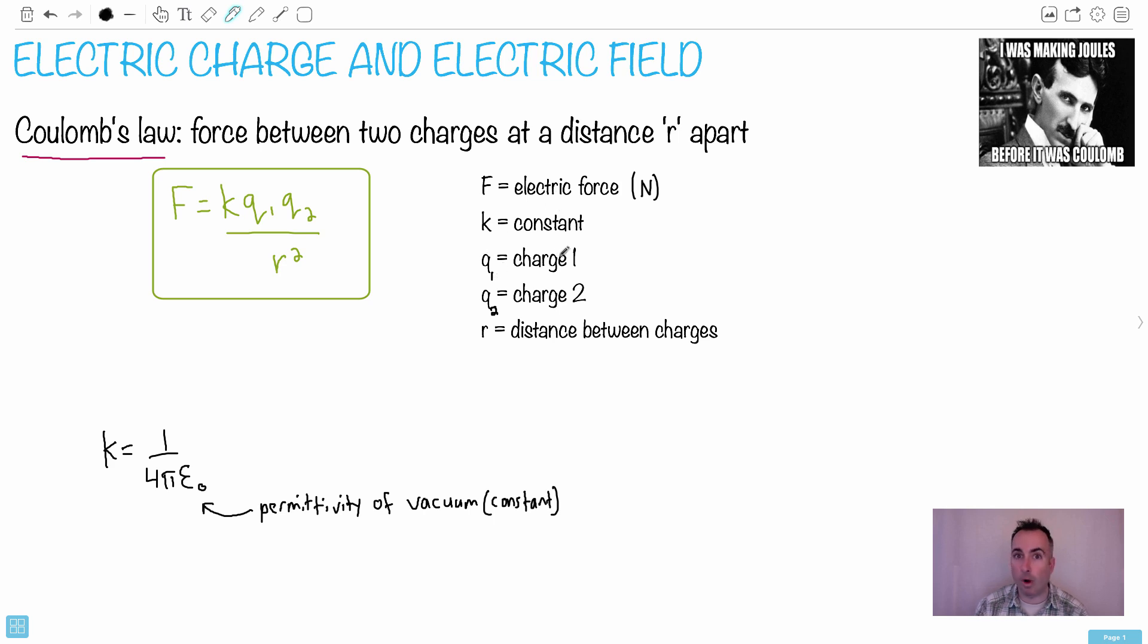Then you have Q1. That's one of the charges. Again, that could be positive or negative, but we're looking at the nature of that charge. So let's put in the units of that charge. Do you remember the units of charge? It's Coulomb. And then charge 2, of course, is also in Coulomb. And R is the distance between the charges. So in this case here, that'll be in meters.